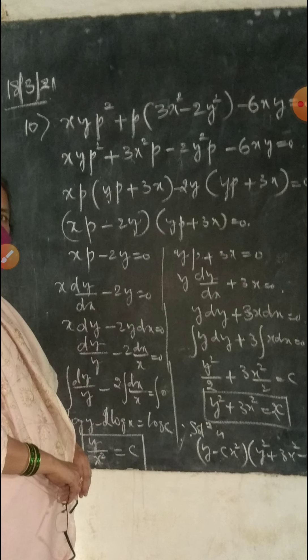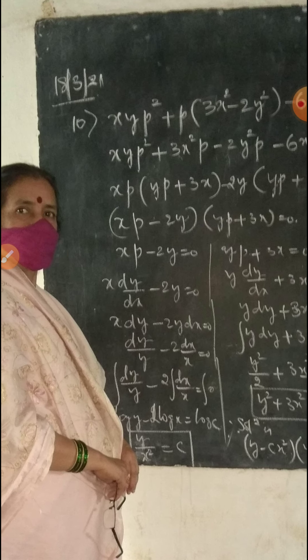Solving XP - 2Y = 0: we write X·dy/dx - 2Y = 0, which gives X·dY - 2Y·dX = 0, or dY/Y - 2·dX/X = 0. Integrating both sides: integral dY/Y minus 2 times integral dX/X equals 0. That is, log Y - 2 log X = log C.